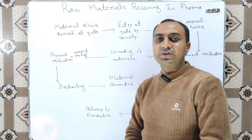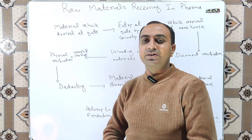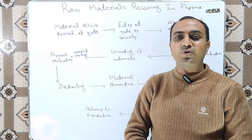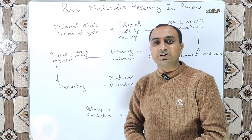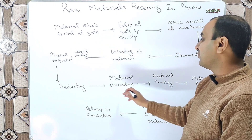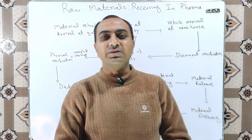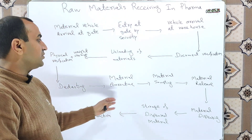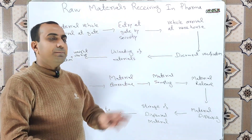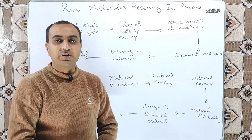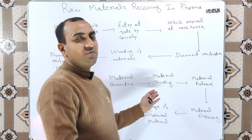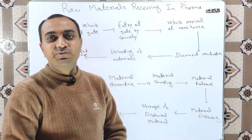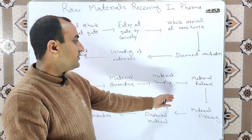When the physical verification and weight checking are done, dedusting is performed. The methods used for dedusting will be discussed in detail in the next videos. The material is then delivered to the quarantine area for storage, and sampling is done by the quality control official.